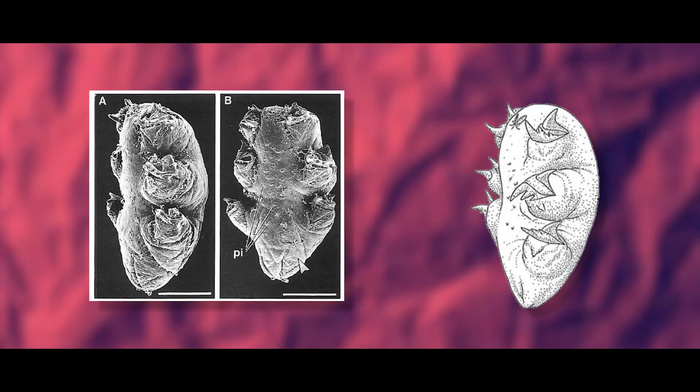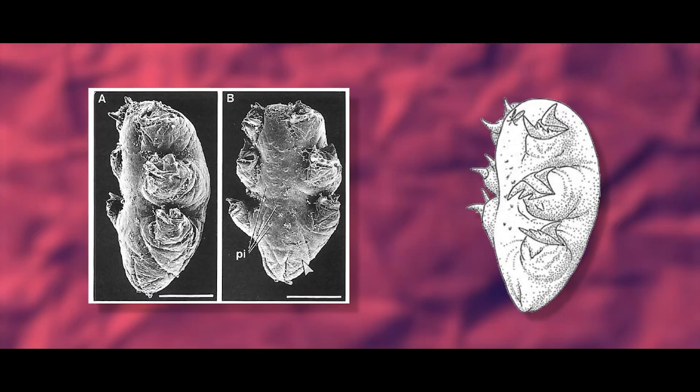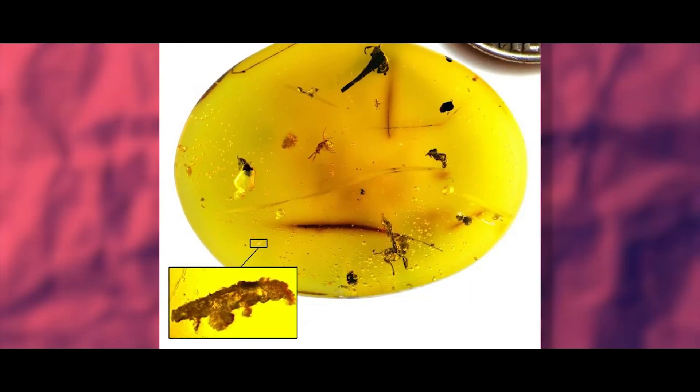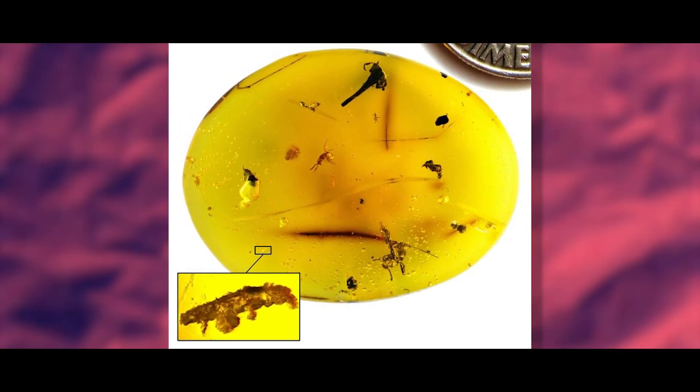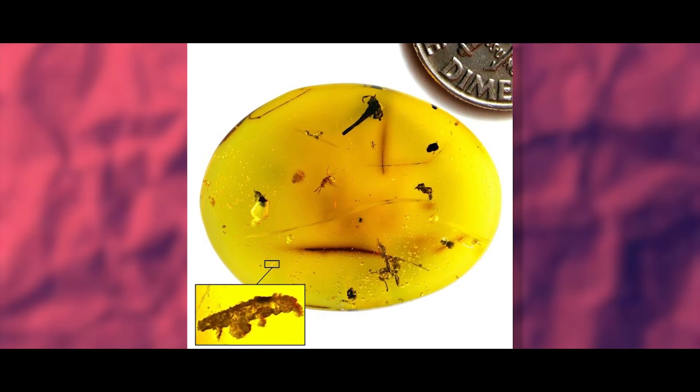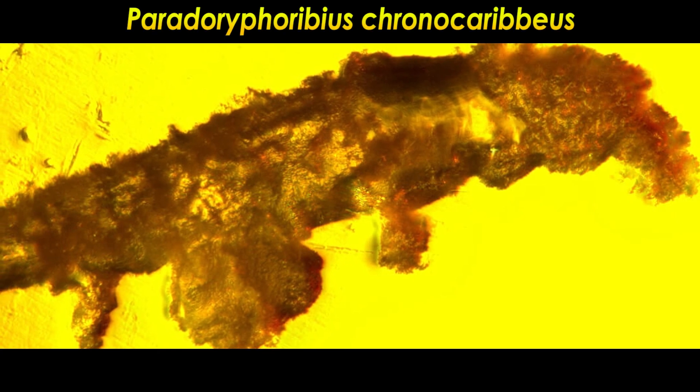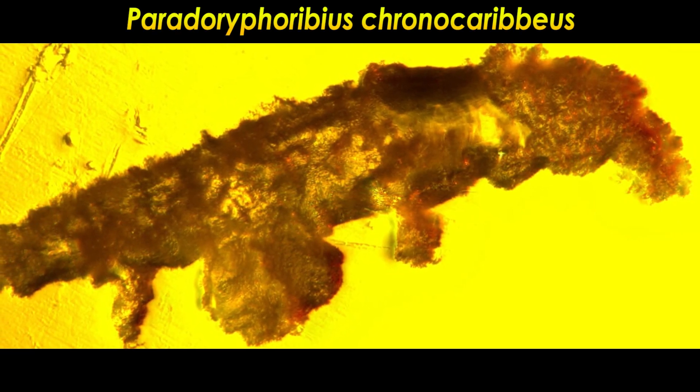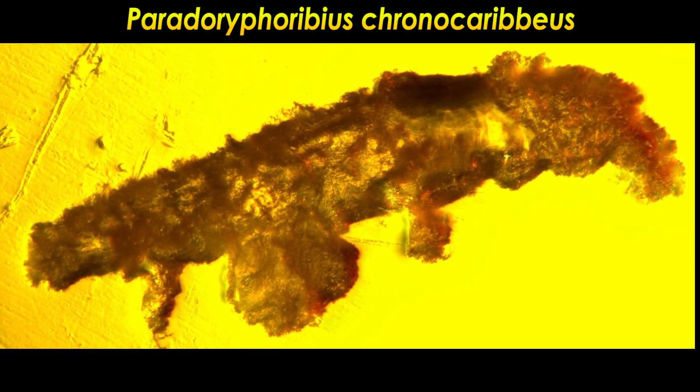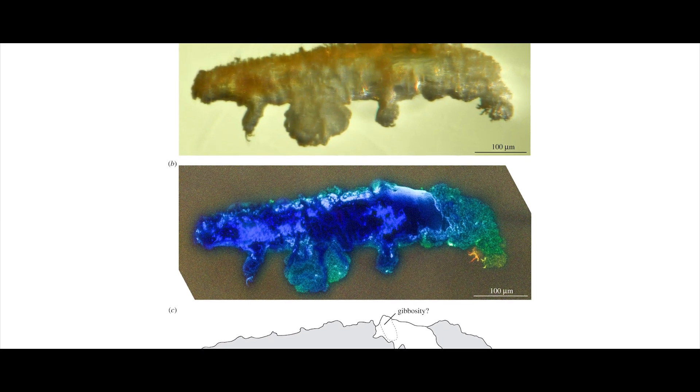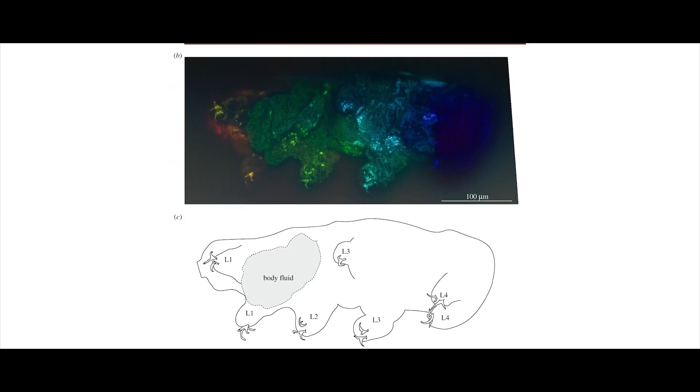Finally, 2021 marked the description of a brand new specimen of Miocene amber from the Dominican Republic containing a single individual that has been given the name Paradoryphoribius chronocaribbeus. Thanks guys, thanks for making it easy for laypeople to read and pronounce. The fossil itself is rather poorly preserved as you can barely tell what's going on, but close observation under different light wavelengths makes it clear that the thing is definitely a tardigrade.